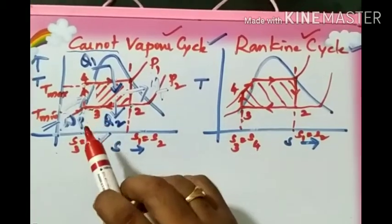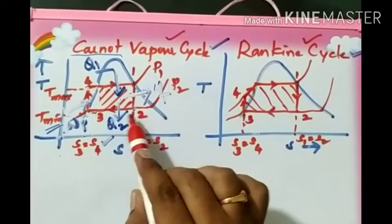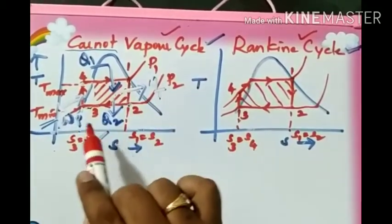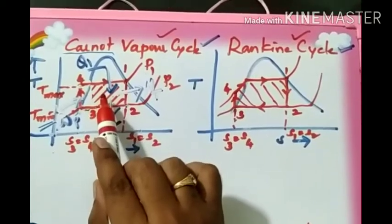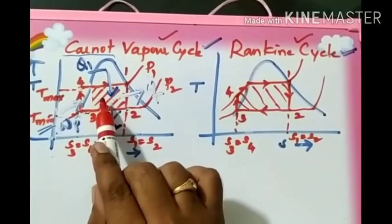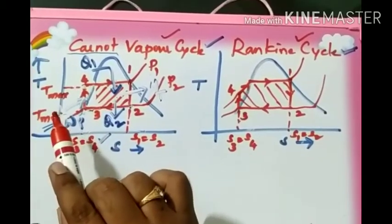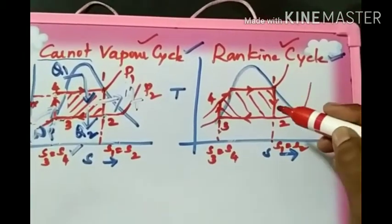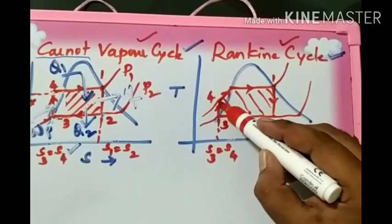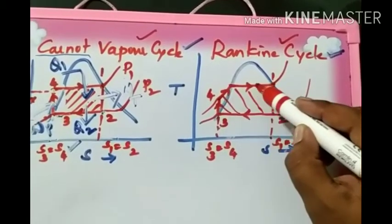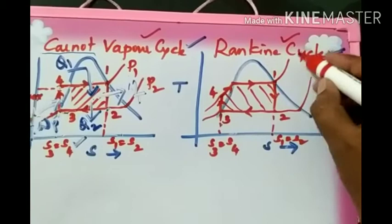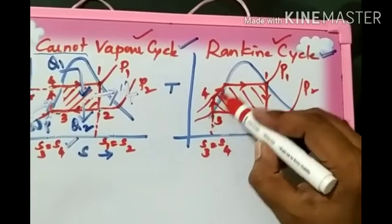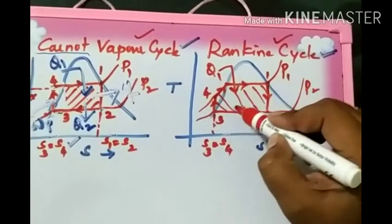Comparing the two cycles: looking at processes 4 to 1 and 2 to 3 in both cycles — in the Carnot cycle, since all processes are ideal, heat addition and heat rejection obviously occur at constant temperature, meaning they are isothermal processes. Whereas in the Rankine cycle, it is very difficult to maintain constant temperature throughout heat addition, as you can clearly see in the diagram where boiler pressure is P1 and condenser pressure is P2.